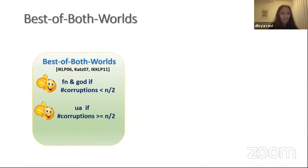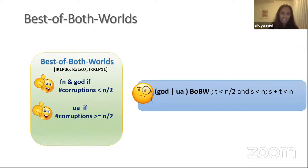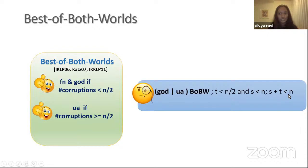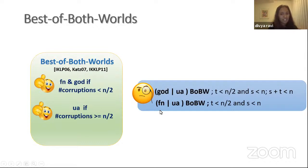We looked at two types of best of both worlds protocols. The first is the ideal best of both worlds, giving GOD in honest majority and unanimous abort in dishonest majority, requiring the sum of thresholds S plus T to be less than N. The second class simultaneously gives fairness in honest majority and unanimous abort in dishonest majority. Since we relax from GOD to fairness in honest majority, this additional restriction on N is not required.